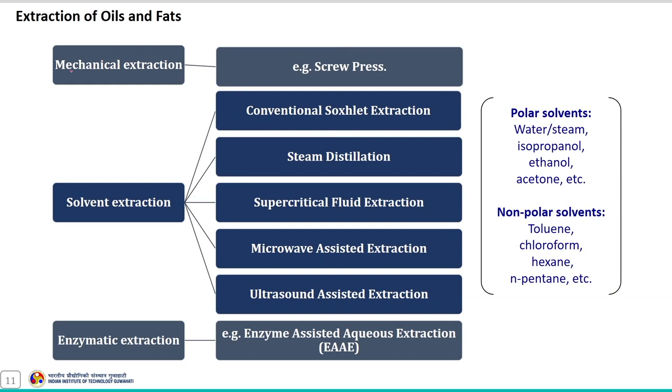After learning about the globally used feedstock material for biodiesel production, let us discuss about the different technologies used to produce this oily feedstock material. Different technologies used for the extraction of oil include mechanical extraction, solvent extraction and enzymatic extraction.